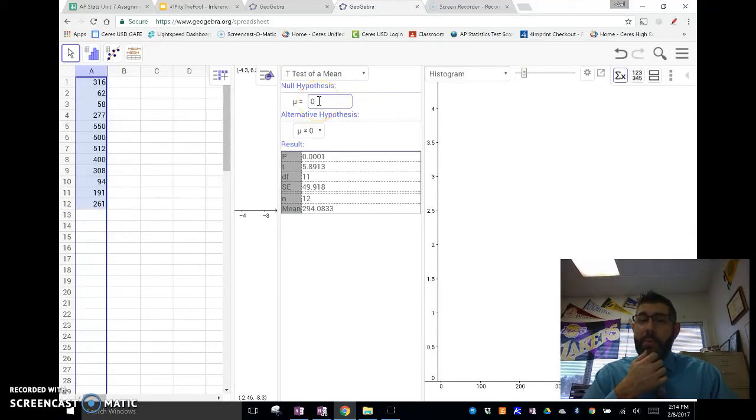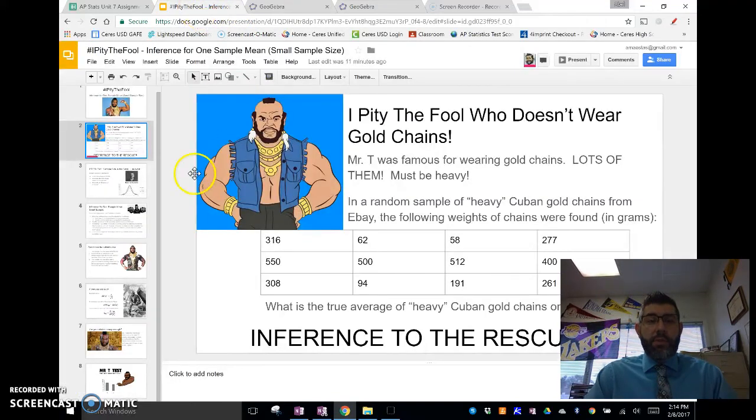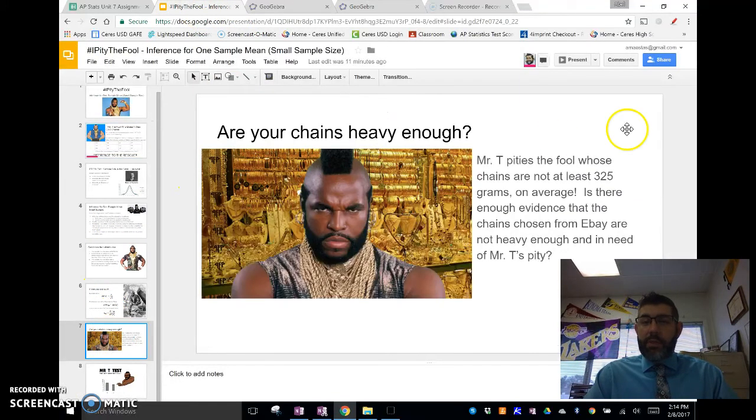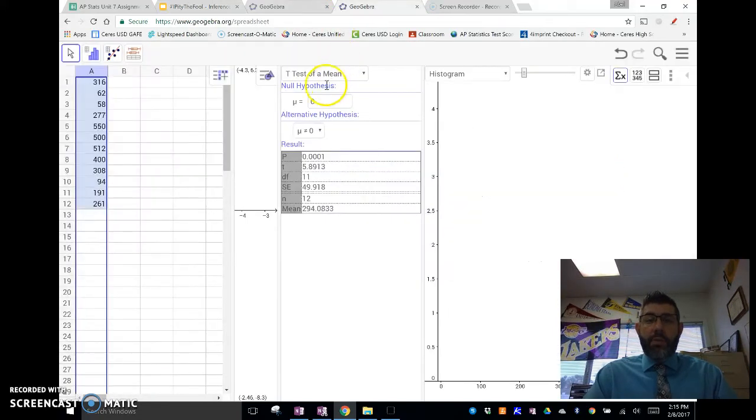our null hypothesis is that mu is equal to, what was our null hypothesis? Mu is equal to what? So, we're talking about Mr. T has said it's at least 325. So, we're going to go and put 325 in here. And then our alternative hypothesis is that it's not at least 325, and we're going to need Mr. T's pity. All right. So, as soon as you click that, you'll notice that down here, we have our results.